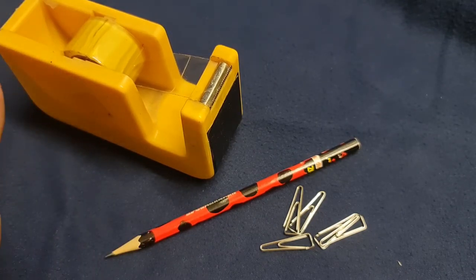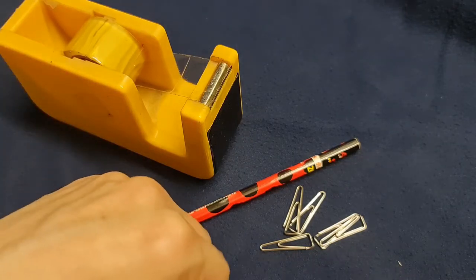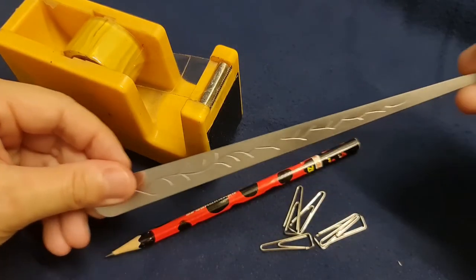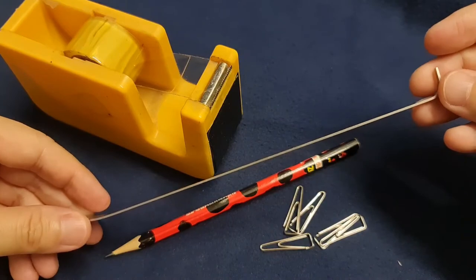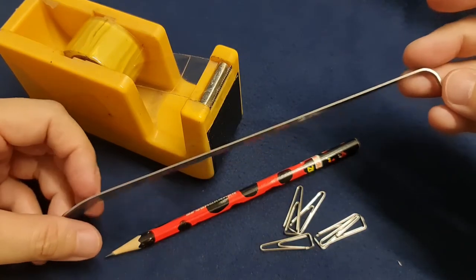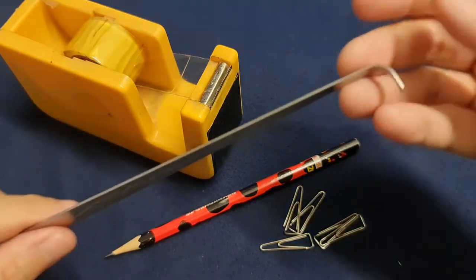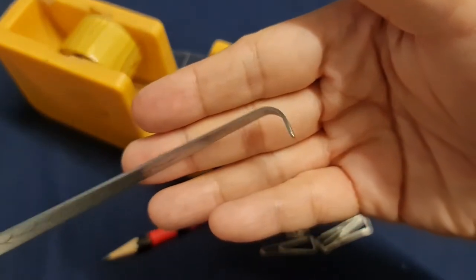Now if you've never seen a proper wick dipper before, here is one that I got online. It's basically a long metal instrument with a little hook at the very end.